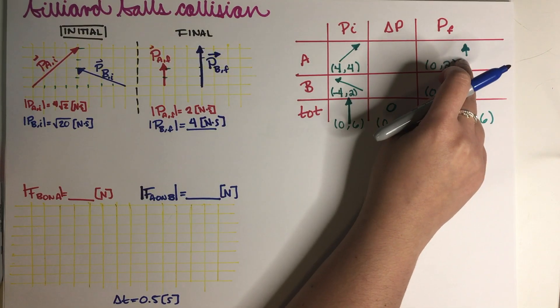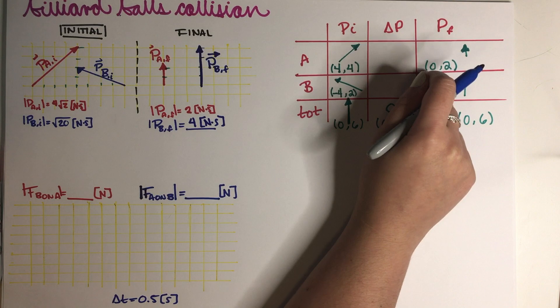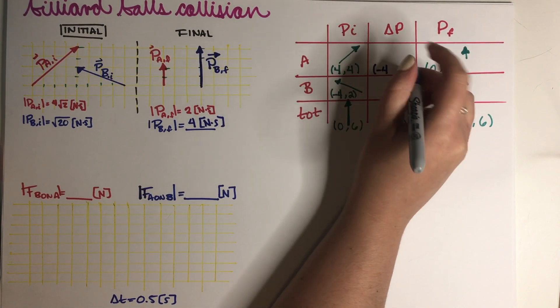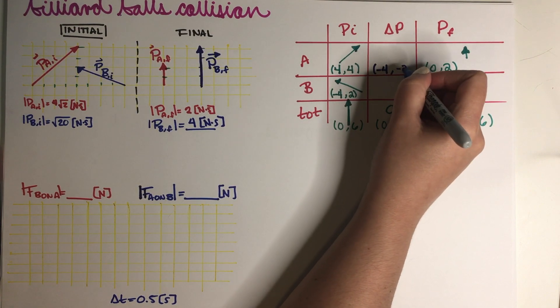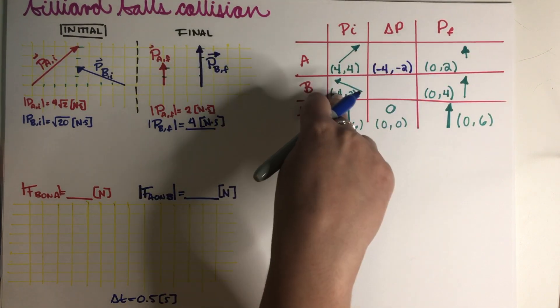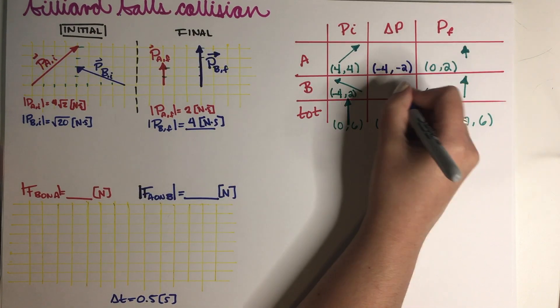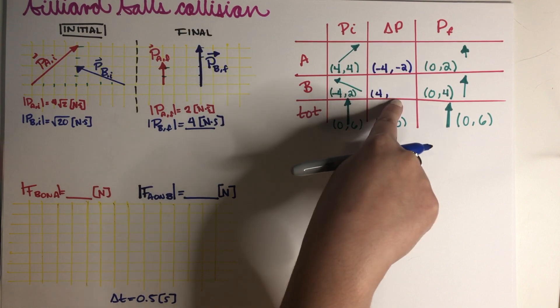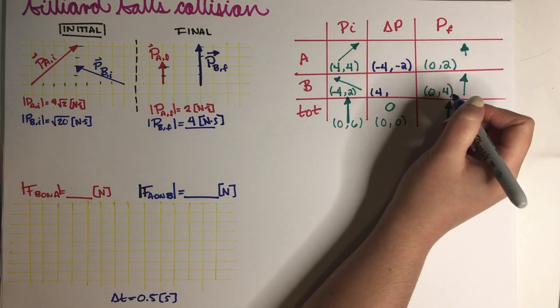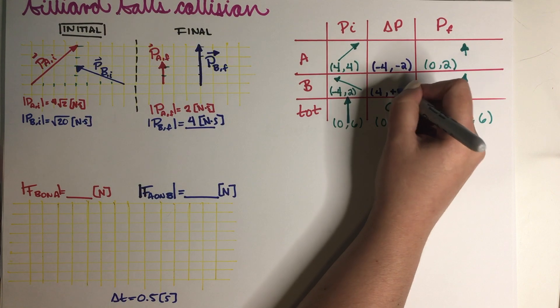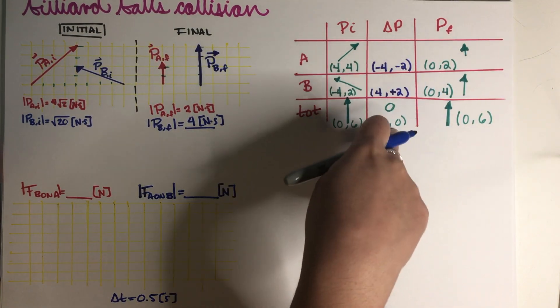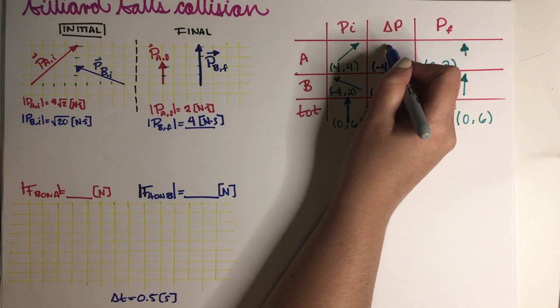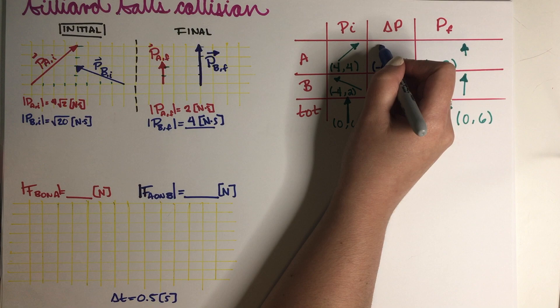So this row has to add up, right? That means that 4 plus something has to add up to 0. Well, that would be negative 4. 4 plus something has to add up to 2. Well, that would be negative 2. Minus 4 plus something has to be equal to 0. Well, that would be positive 4. Positive 2 plus something has to be equal to 4. Well, that would be positive 2. And as you can see, this column adds up to 0 as well. So this is just negative negative.